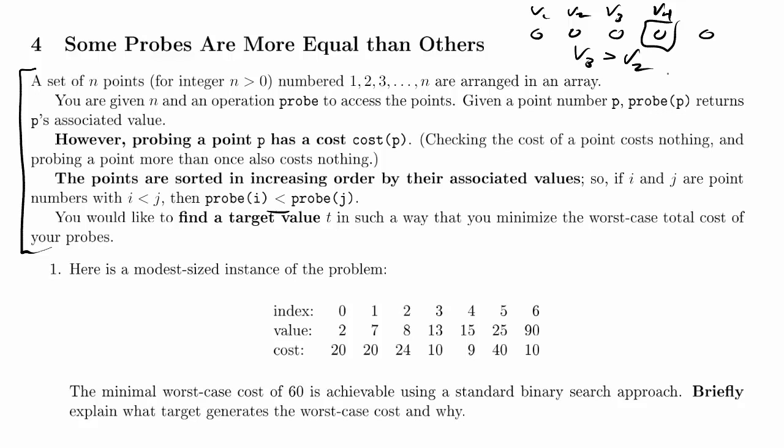That would take one probe per point, and then a logarithmic number of additional probes for binary search. But since only the first probe on each point matters, that would be kind of the worst possible solution we could create, because we would probe every point. So what we want to do is take advantage of the fact that the points are sorted, so that we spend fewer probes.